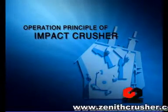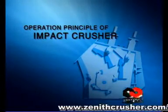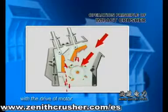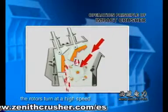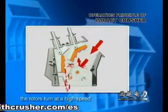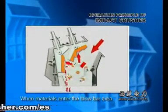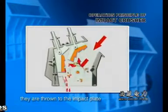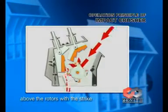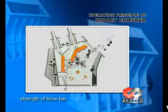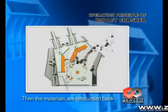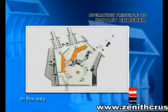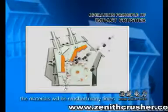During operation, with the drive of the motor, the rotors turn at high speed. When materials enter the blow bar area, they are thrown to the impact plate above the rotors with the striking force of the blow bar. The materials are then rebounded back to the blow bar for re-crushing.